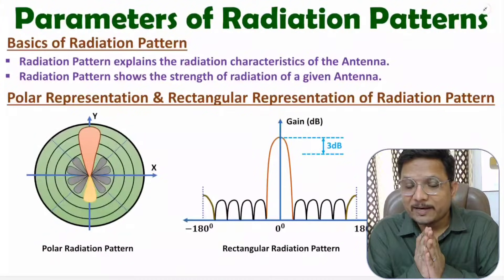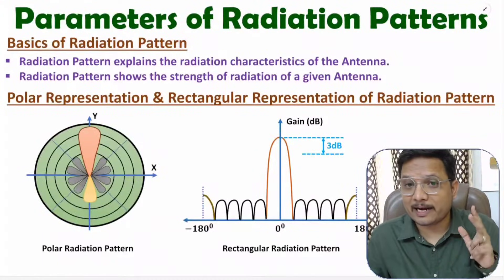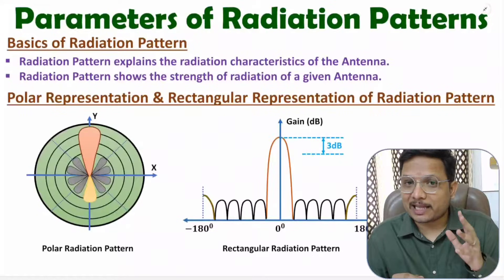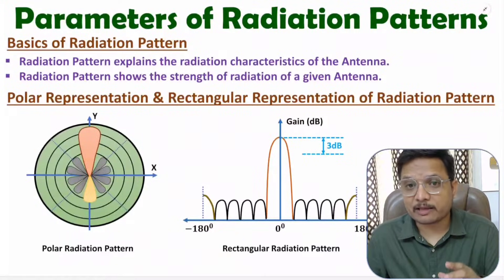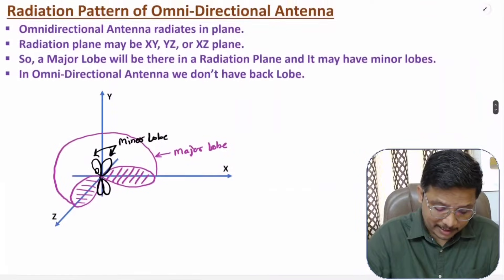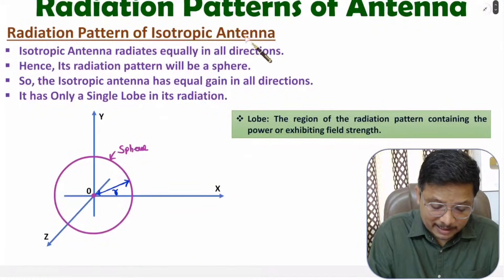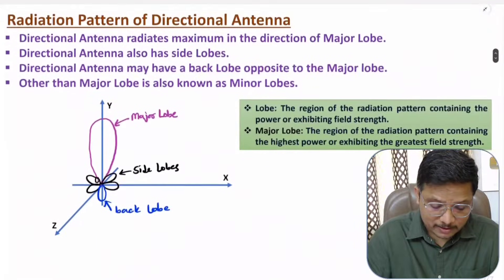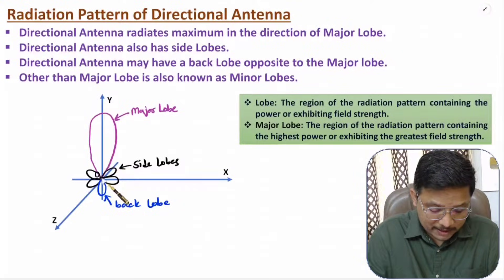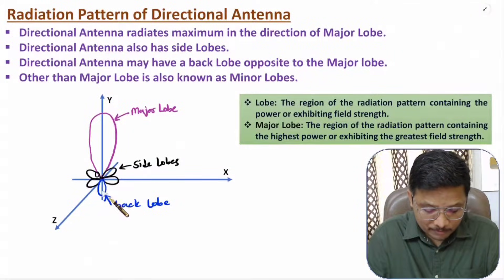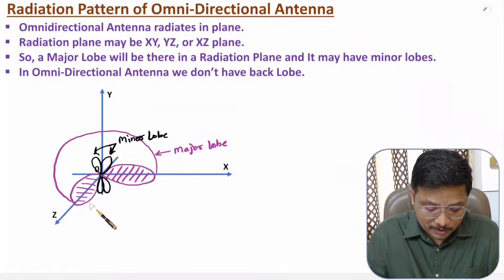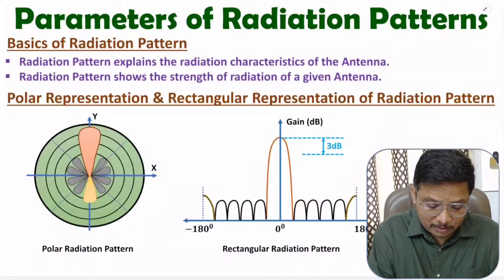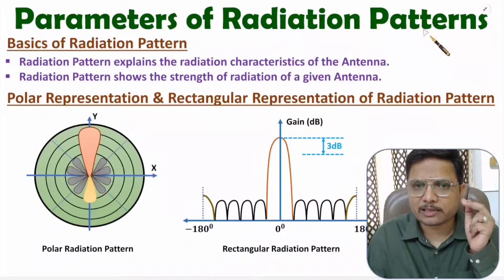Hello friends, welcome to Engineering Funda family. This is my second video of the Antenna and Wave Propagation video lecture series. In this video I'll explain the parameters of radiation pattern of an antenna. In my last video I explained different types of radiation patterns, covering three categories: isotropic antenna's radiation pattern (a sphere), directional antenna's pattern (with major lobe, side lobes and back lobe), and omnidirectional antenna's pattern. Now in this video I'll be explaining parameters of radiation pattern.